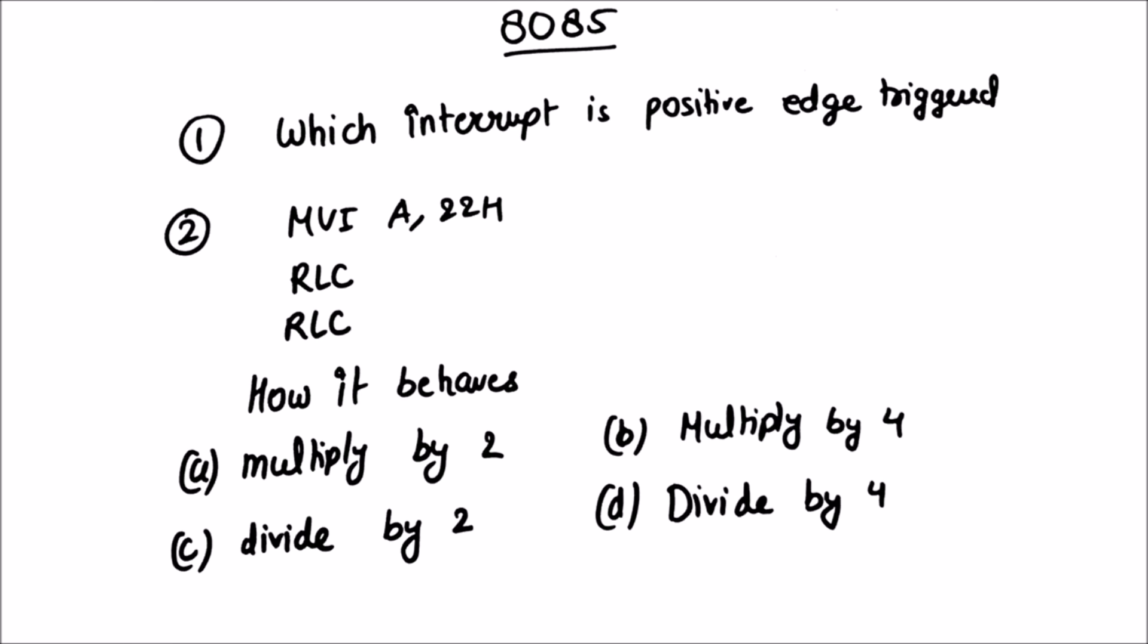Next is 8085, in which one question was asked which interrupt is positive edge triggered. They were given 4 options of various interrupts. Next was MVI A, 22H, RLC, LLC. This command is given and they asked how it behaves, is it multiply by 2 or multiply by 4.